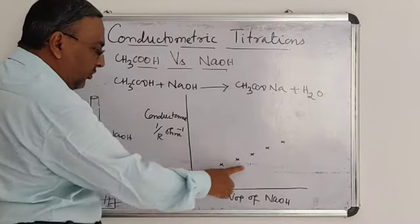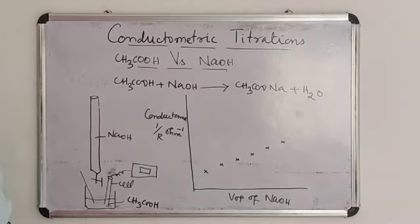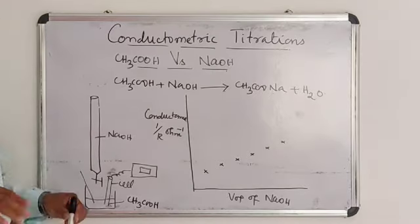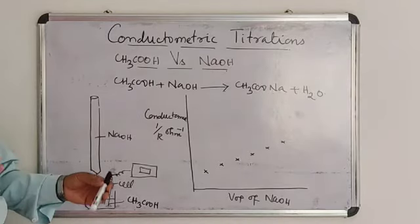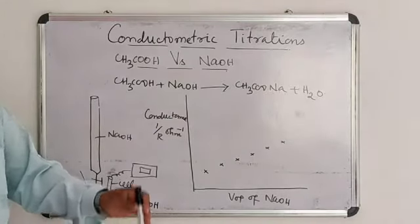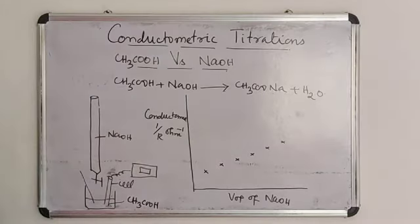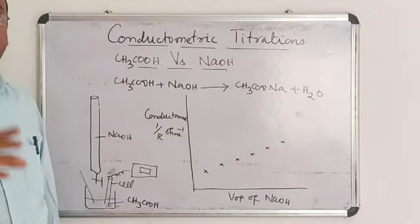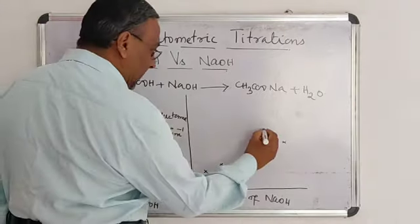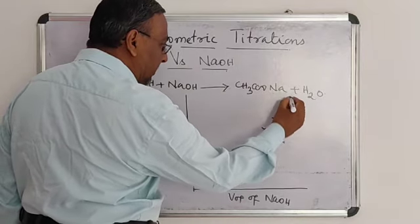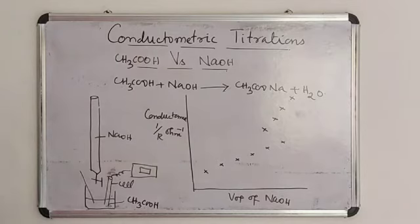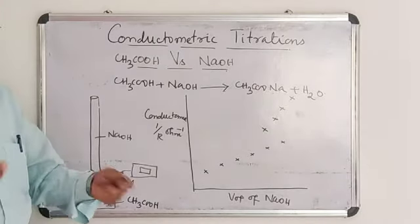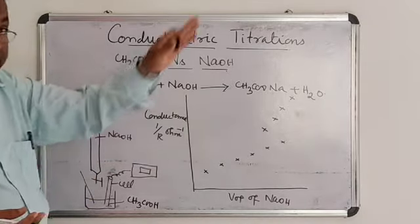This increase in conductance is due to the formation of sodium acetate salt, which is a strong electrolyte. As more and more sodium hydroxide is added, more sodium acetate is formed and conductance gradually increases. When all the acetic acid is completely neutralized and converted into sodium acetate — that is, when the end point is reached — the excess addition of sodium hydroxide supplies OH⁻ ions, which have very high conductance. Therefore, conductance suddenly increases sharply after the end point.